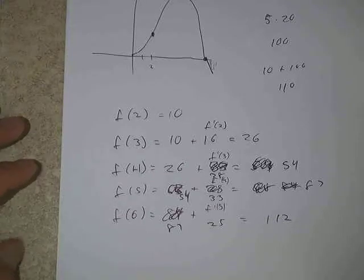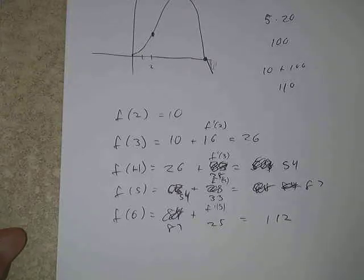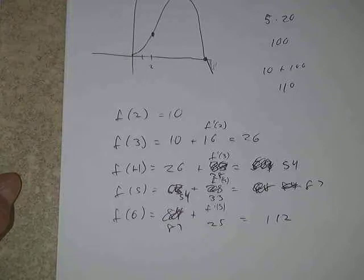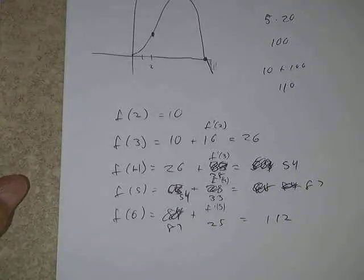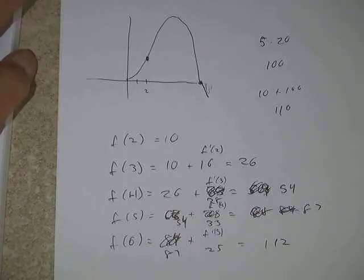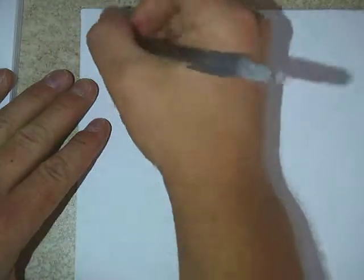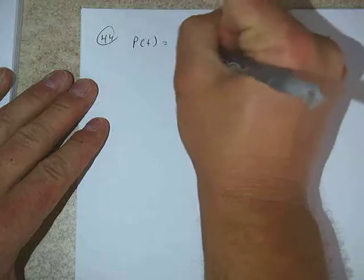A student asked how the first area was estimated. Each square in the graph was worth 5 units, and counting approximately 20 of them gives the total. You can count whole squares and estimate partial squares. Could you also use the trapezoidal rule? Yes — since the y-values are visible, trapezoidal rule is another valid option. The key concept is understanding that the area under the derivative curve accumulates positive values for f.